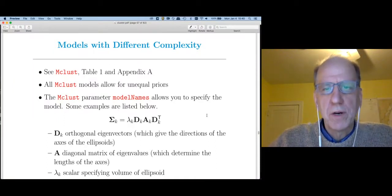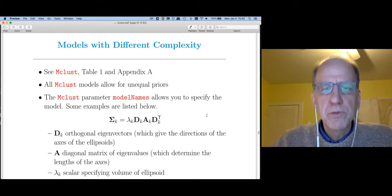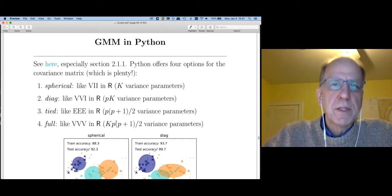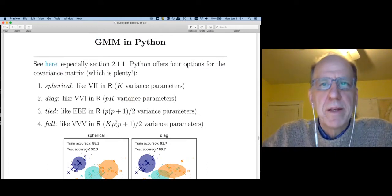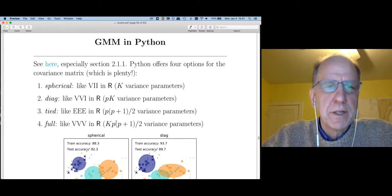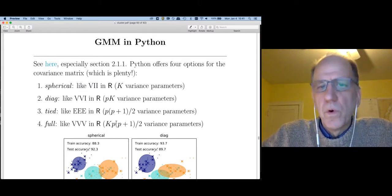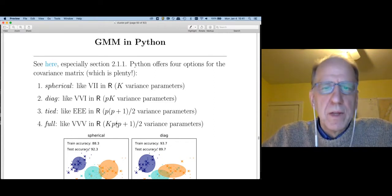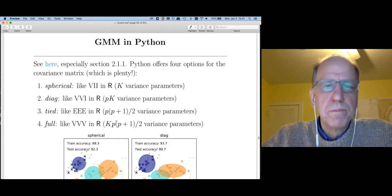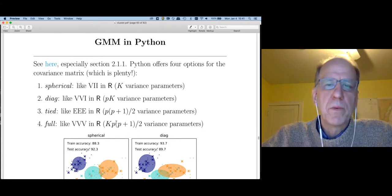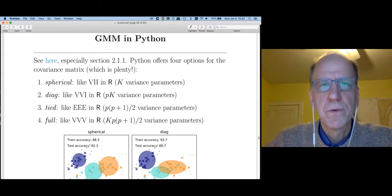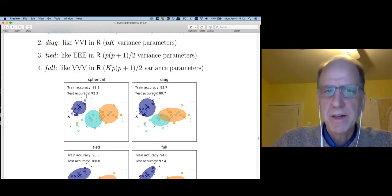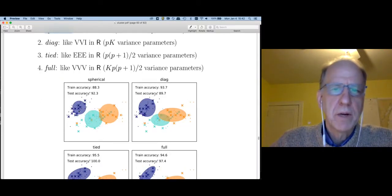So as a consequence, Gaussian mixture software will allow you to specify a restricted version of these correlation matrices. When it comes to specifying the models, I actually prefer the Python implementation over the R implementation. Python only offers you four options, and that's probably all that you need. The mclust library in R offers you many more to the point where it's just confusing. So let's go take a look at the four options offered by Python.